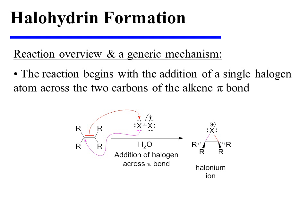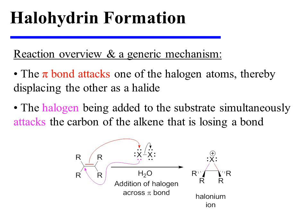The reaction begins with the addition of a single halogen atom across the two carbons of the alkene pi bond, resulting in the formation of a cyclic halonium ion in which the halogen bears a formal positive charge. Three mechanistic arrows describe this step. In the first, the alkene pi bond attacks one of the two halogens. Then a halide is displaced. And finally, the halogen being added across the pi bond attacks the carbon of the alkene that would otherwise have lost a bond.